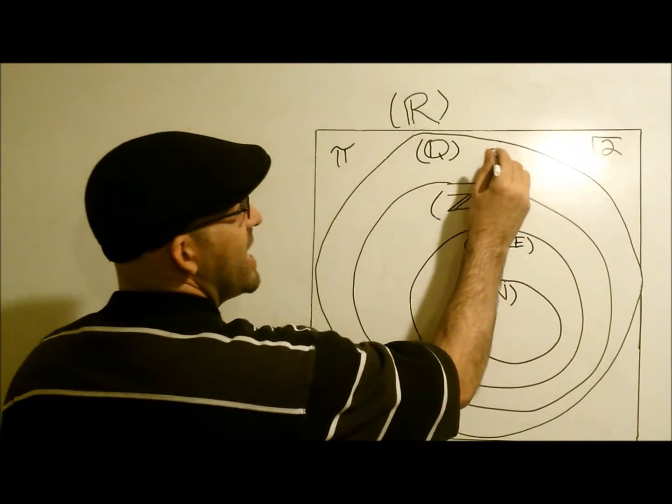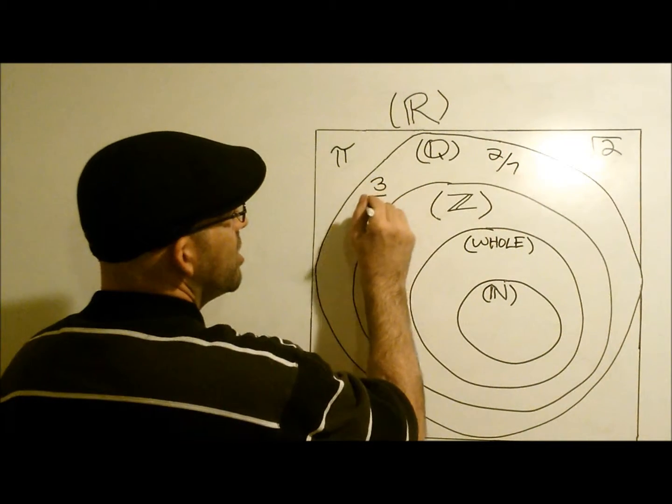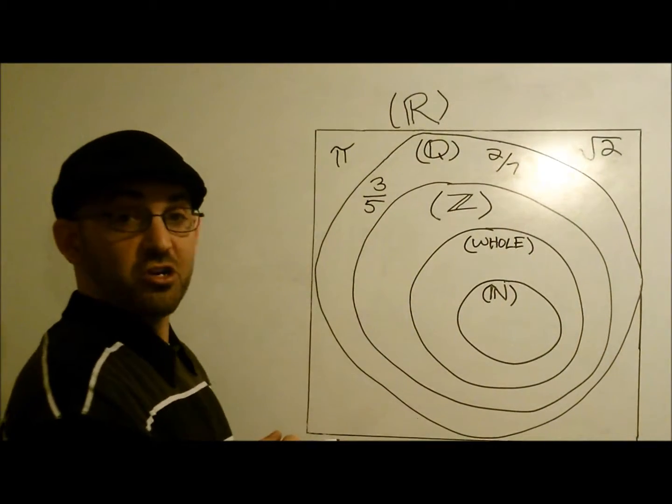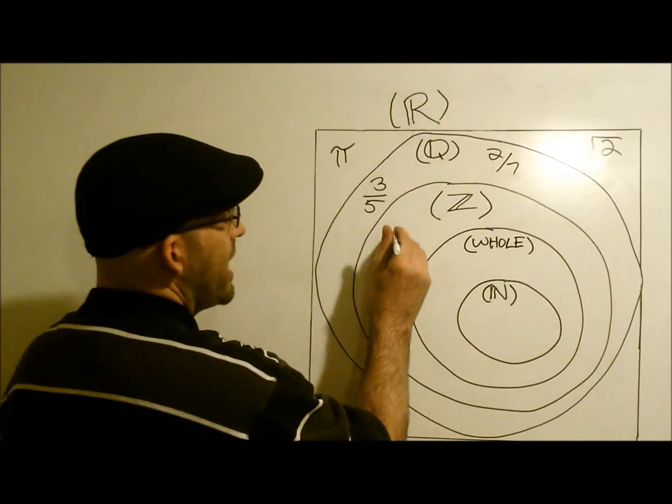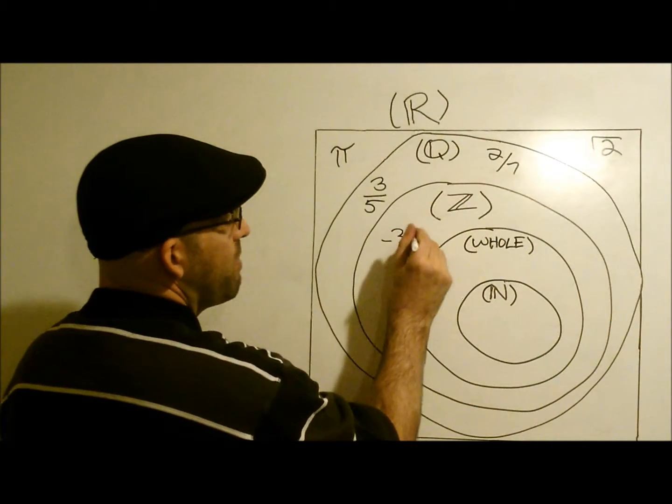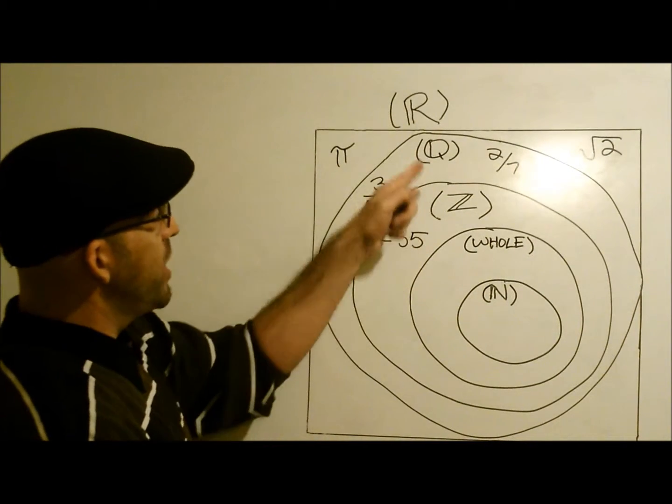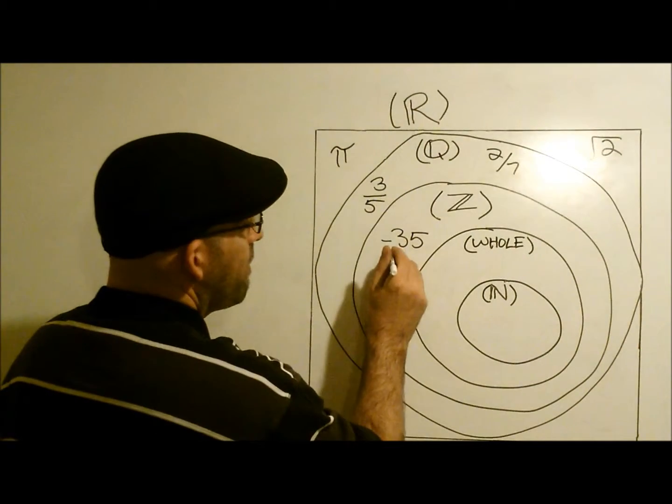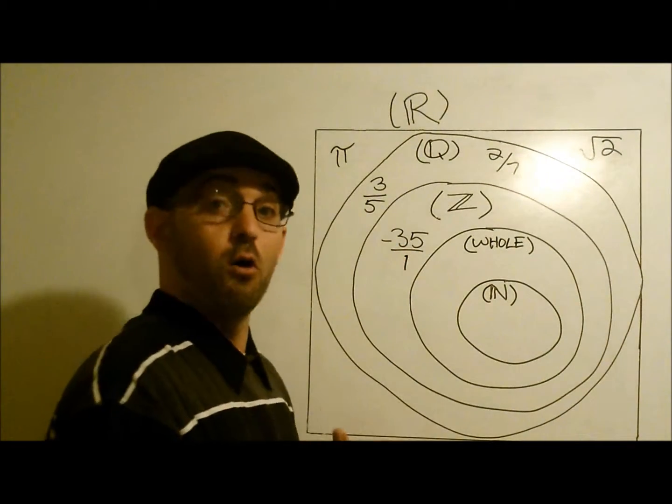Rational numbers such as 2/7ths, 3/5ths would fall in there. Now, integers. Well, we know that integers are like the number 35. Negative 35 is also a rational number. Why? Well, negative 35 can be also written as negative 35 over 1, which is a quotient of two integers.